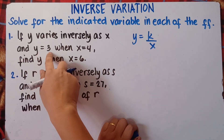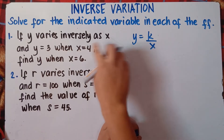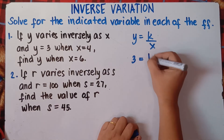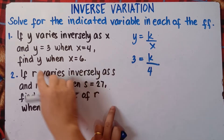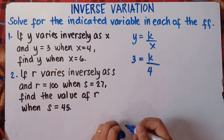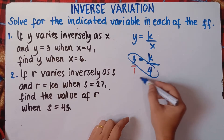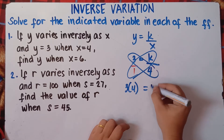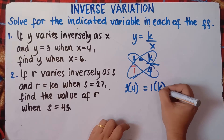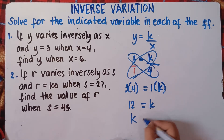For the first equation, y equals 3 when x equals 4. Substitute: 3 equals k over 4. To get the value of k, use cross multiplication — understood that there's 1 here. So 3 times 4 equals 1 times k, giving 12 equals k. Therefore, our k equals 12.